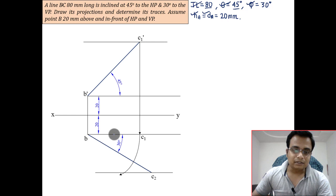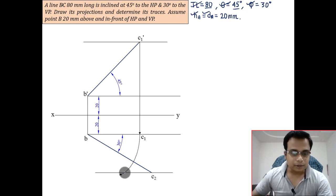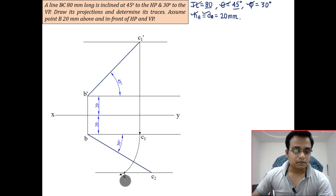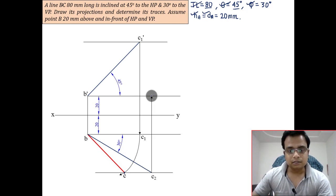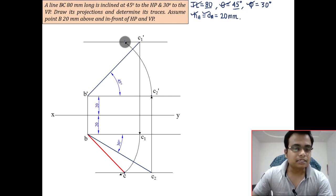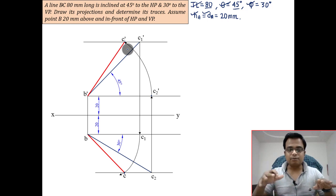Now rotate this BC1 with respect to B. Keep one leg of your compass at B, other leg at C1, and give it a clockwise rotation. This point is C. Join C with B so you have the final top view. Similarly, you can go from C to head upwards. This point will give you point C2 dash. With B dash as center and B dash C2 dash as the radius, give it an anti-clockwise turn and that's C dash, the final front view.